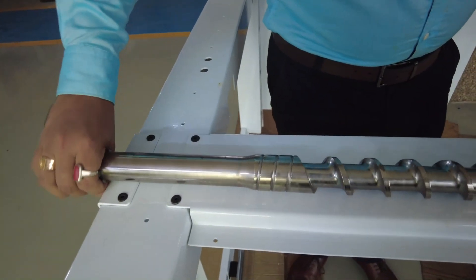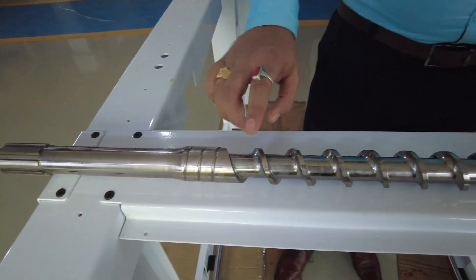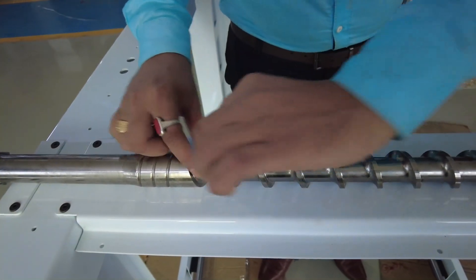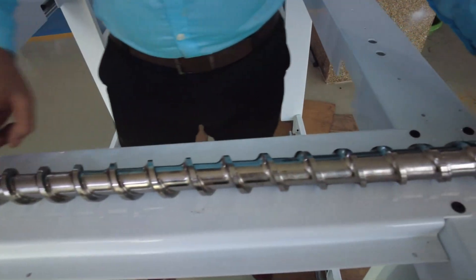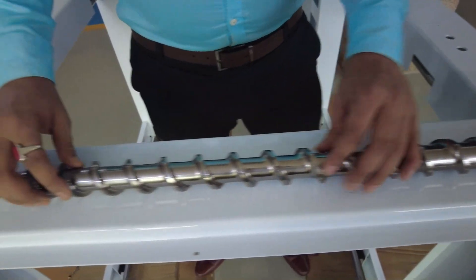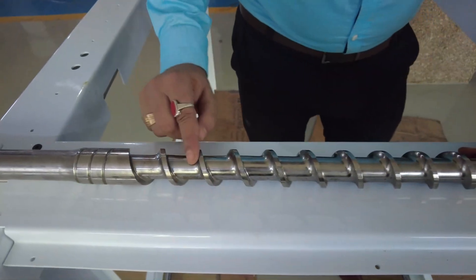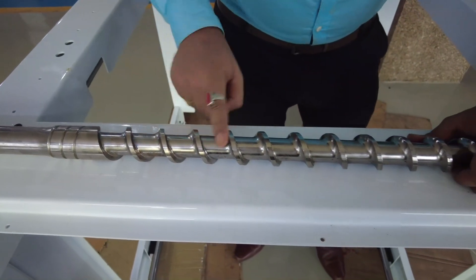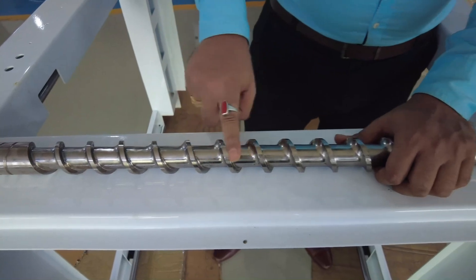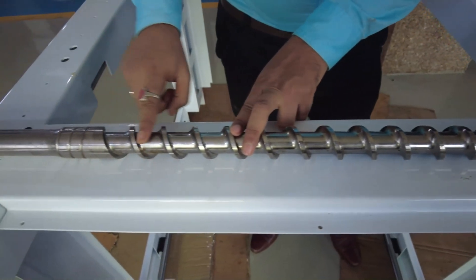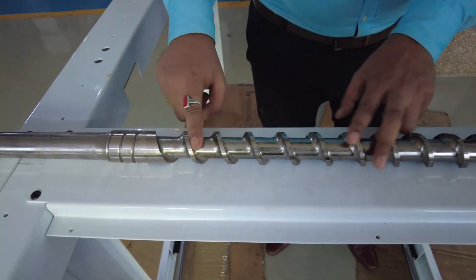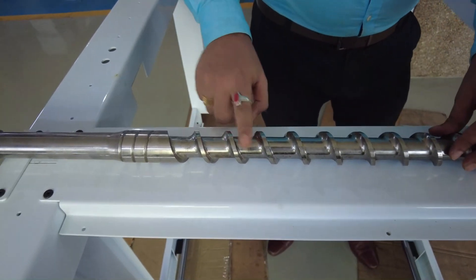This is how our reciprocating screw is fixed with the hydro motor. The depth you can see here is known as flight depth, and these are the flights which are coated above the screw. This is the depth where your raw material gets accumulated and moves forward for the purpose of injection.